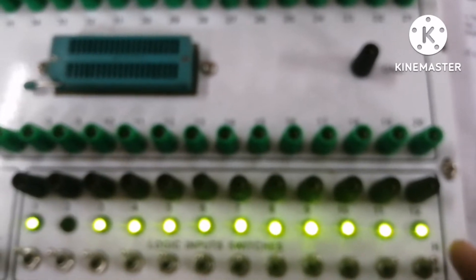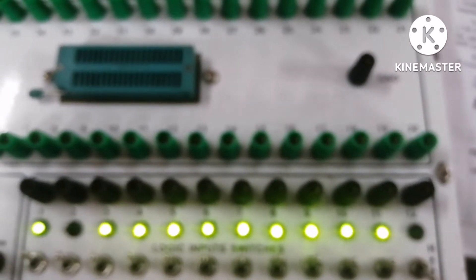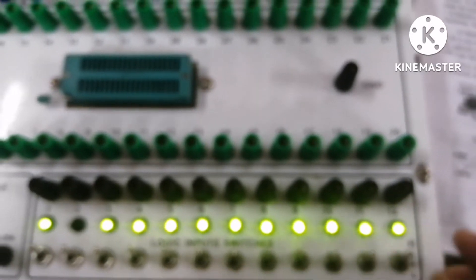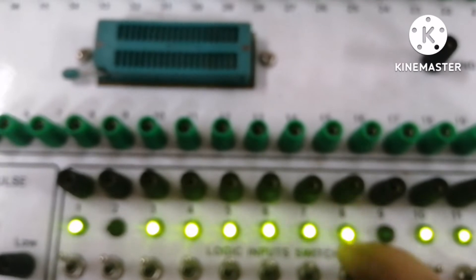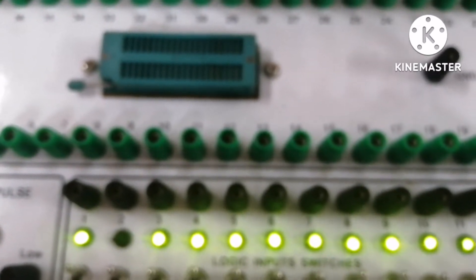Digital systems only understand the language of 0 and 1. So low is 0, high is 1. It is indicated by the LEDs over here. Each switch has got one LED like this, so it indicates whether it is high or low.